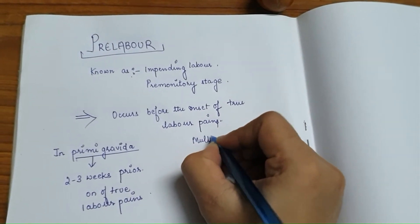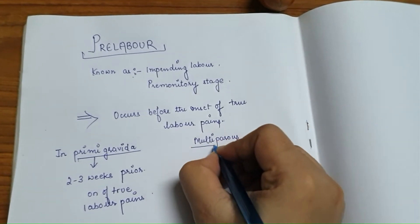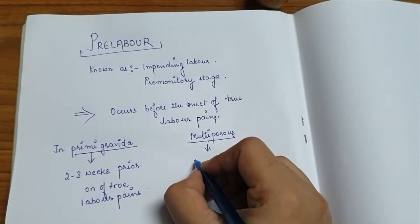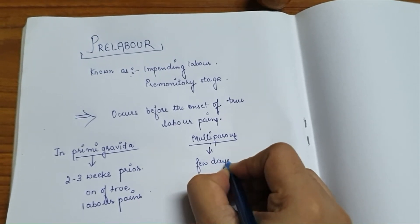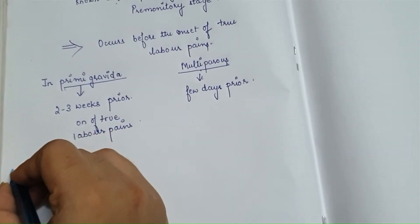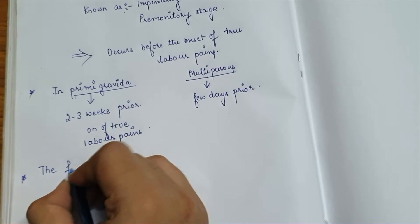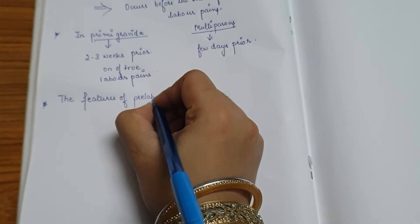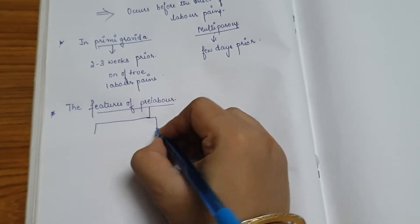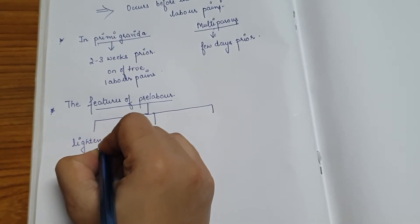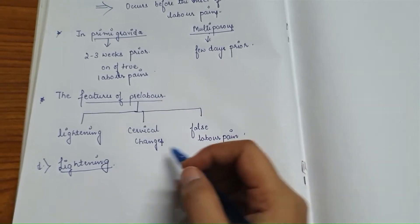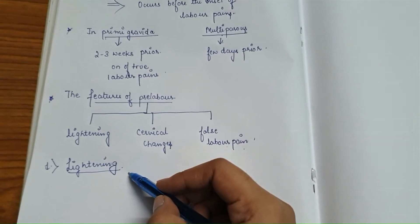In multipara — a woman who is pregnant for more than one time — pre-labor occurs a few days prior to true labor. The features of pre-labor are basically three: first is lightning, next is cervical changes, and the third is false labor pains. We will start with lightning, the first feature of pre-labor.